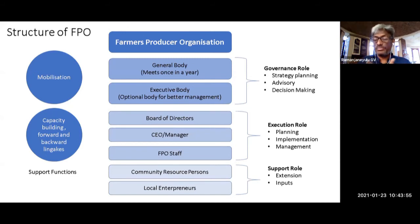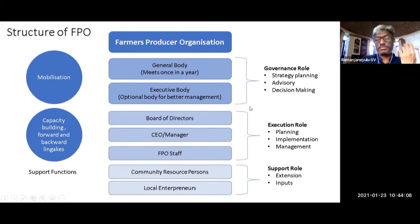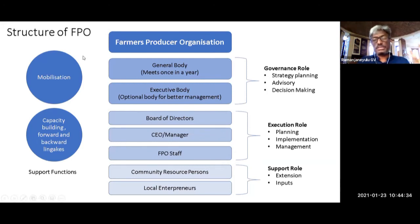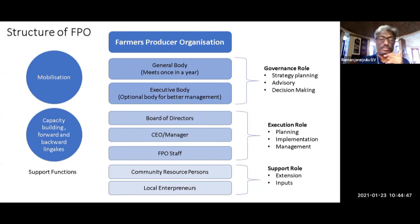A key challenge is that on day one, members may not have all the required skills — that is entirely expected. To impart those skills, we take support from support organizations: a local NGO, a resource organization, state departments, or individual consultants. In the very initial stages, support is about mobilizing farmers and completing registration, but as the FPO moves into specialized activities, a different kind of capacity building and different forward and backward linkages are needed.